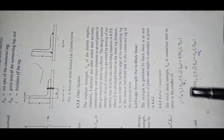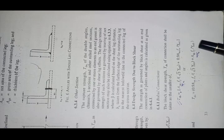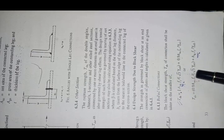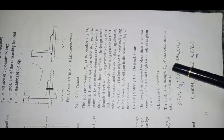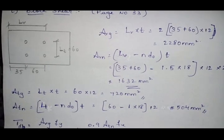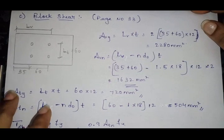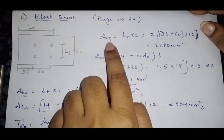From IS 800 page number 33, design strength due to block shear. For bolted connections, two equations are given. Tdb = Avg·fy / (√3 · γm0) [plus a tension term], or an alternative equation. Whichever value is least among the two gives the Tdb value — the strength of the plate in block shear. We need to find the gross and net areas.